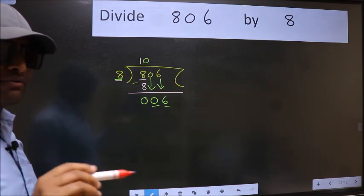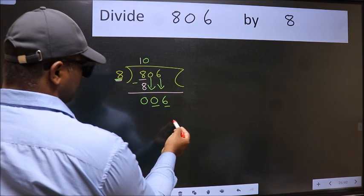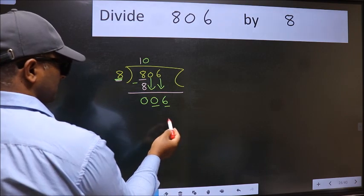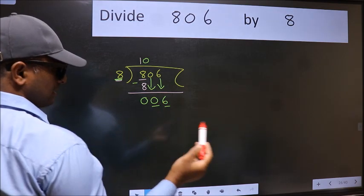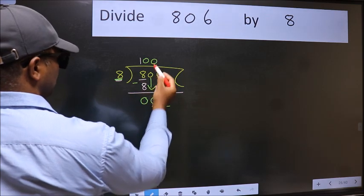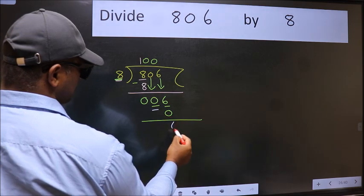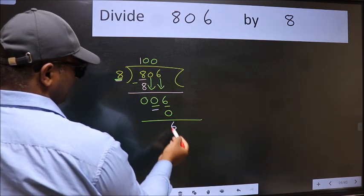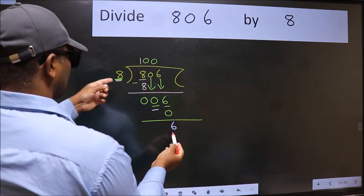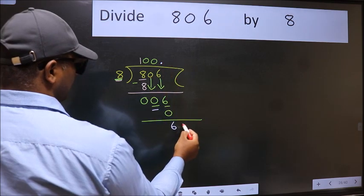Instead of that, what we should think is which number should we take here. If I take 1, we will get 8, but 8 is larger than 6. So what we do is we take 0. 8 into 0 is 0. Now we subtract. We get 6. Over here, we did not bring any number down, and 6 is smaller than 8.